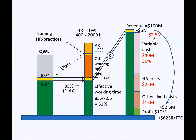Human capital production function in mathematical form goes like this. Production volume is the revenue, which is the function of the key coefficient times human resource in full-time equivalent times theoretical yearly working time times one minus auxiliary working time. This is the same as the time for work. And finally, all this has to be multiplied with the quality of working life index.